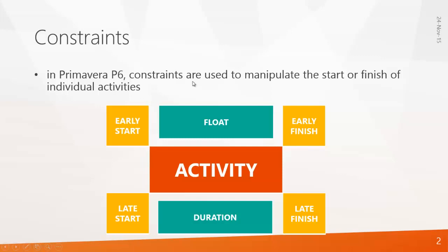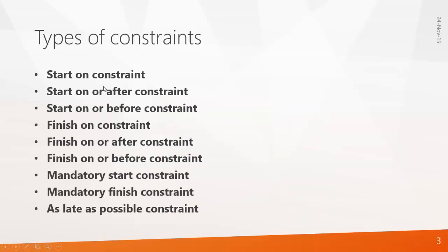In Primavera, constraints are used to manipulate the start or finish of individual activities. Every activity has an early start, late start, early finish, late finish, duration, and float. If you place a constraint, it will affect the early start, late start, early finish, or late finish. There are nine types of constraints in Primavera.